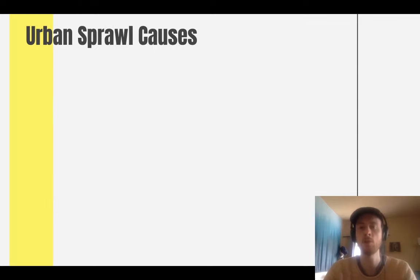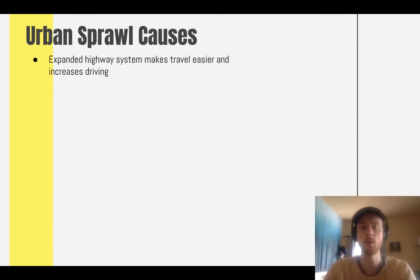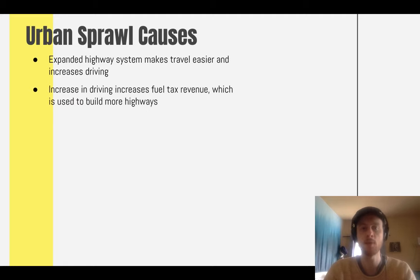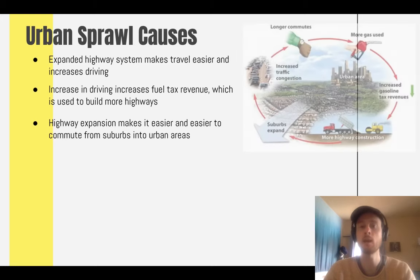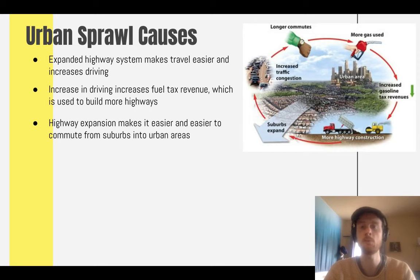Highways and the gasoline tax also play a role. As the highway system expands, it becomes easier to live in the suburbs and commute into the city. More driving increases gasoline consumption, and the gasoline tax revenue is used to build more highways. As more highways are built, commuting becomes even easier, driving increases further, generating more gasoline tax revenue, and even more highways are built. This is another positive feedback loop: gasoline tax funding highway construction, causing more driving, generating more tax revenue, and the cycle continues.